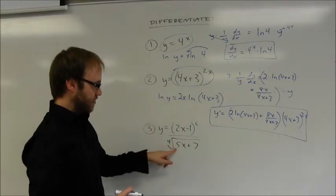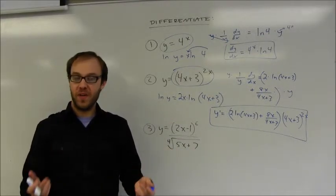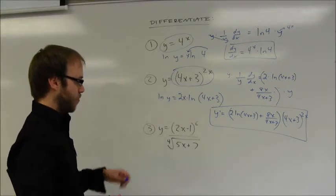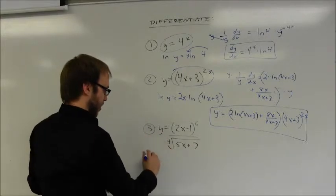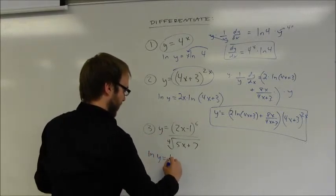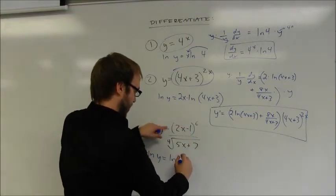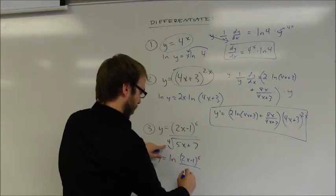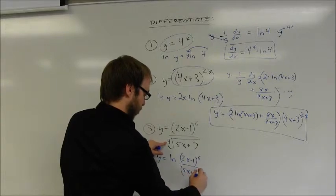You would probably want to rewrite this as being taken to the 1 fourth power. But this can also be done using logarithmic differentiation. And I wanted to give an example of why that's potentially a good idea. Again, I can take the natural log of both sides. So that's the natural log of y equals the natural log of this whole quotient, which is 2x minus 1 raised to the 6th power over 5x plus 7 raised to the 1 fourth power.